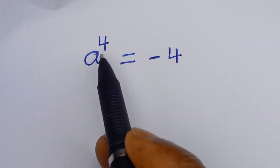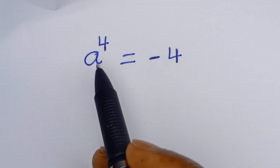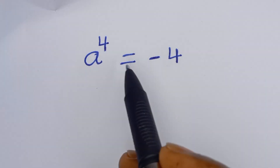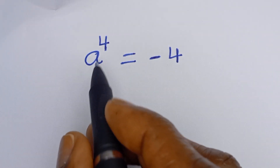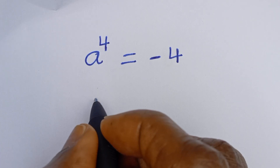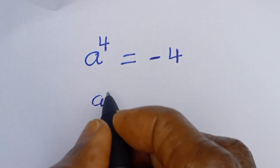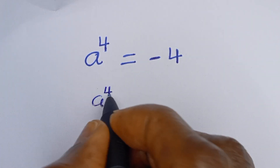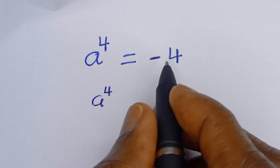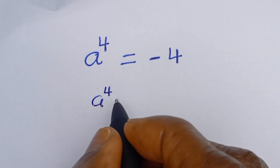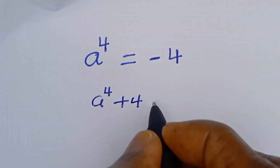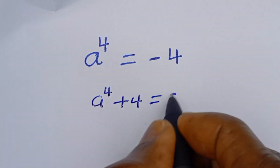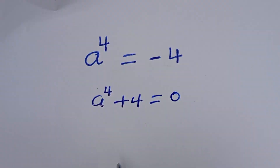Hello. How to solve for a in this beautiful equation: a to the power of 4 is equal to minus 4. If we take the 4 to this side, it becomes a to the power of 4 plus 4 is equal to 0.